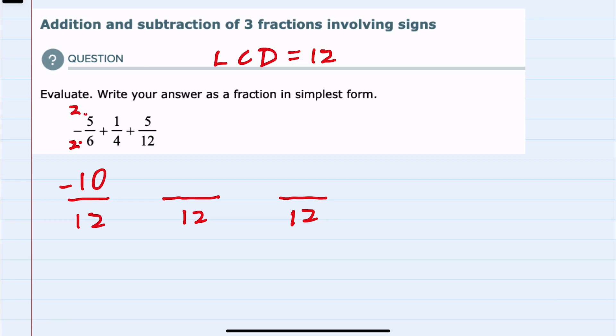And then our second fraction has a 4 in the denominator, so I would need to multiply here by 3. Again, doing the same in the numerator would give me 1 times 3, or 3. And then my last fraction already has a 12 in the denominator, so there's nothing to change here.